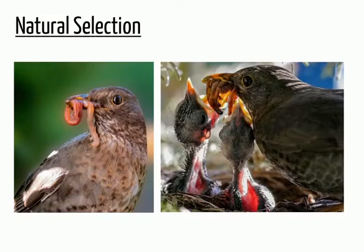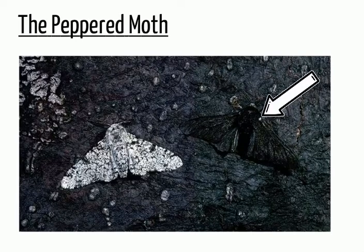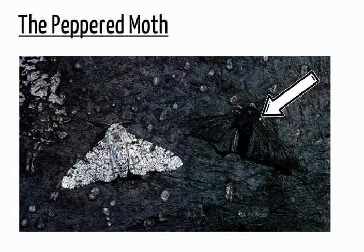This process Darwin called natural selection. An example of natural selection in action is the peppered moth. In 19th-century Britain, a variant of the peppered moth which was black in color became particularly prevalent in urban areas due to high levels of soot and pollution. This resulted in the black peppered moth becoming much harder for predators to spot, thereby increasing its ability to survive and produce offspring.